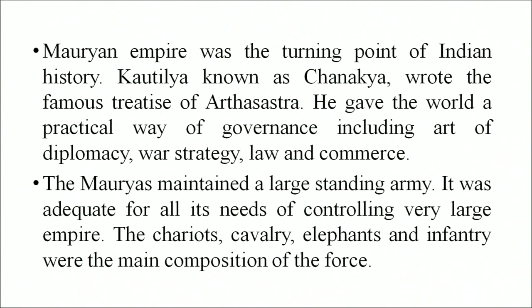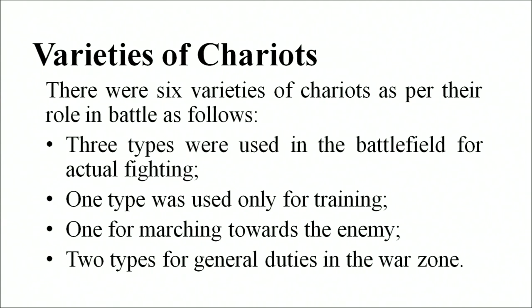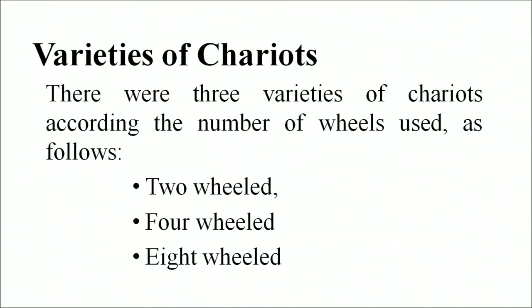The Mauryans maintained a large standing army, adequate for all its needs of controlling a very large empire. The chariots, cavalry, elephants, and infantry were the main composition of the force. They had a variety of chariots — all six varieties. Three types were used in the battlefield for actual fighting, one type was used only for training, one for marching towards the enemy, and two types for general duties in the war zone. There were three varieties of chariots according to the number of wheels: two-wheeled, four-wheeled, and eight-wheeled.